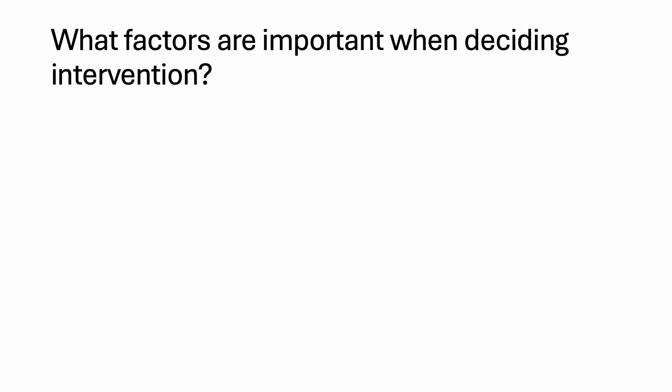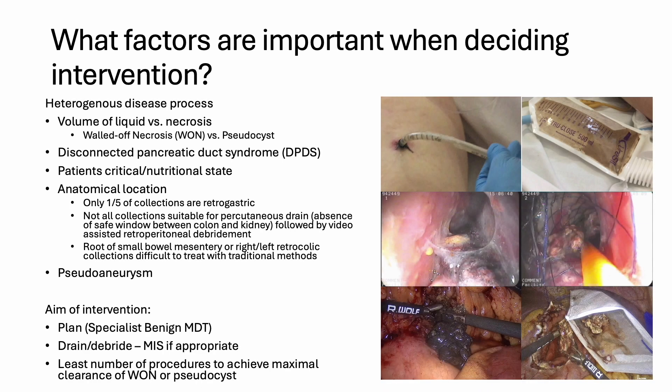What factors are important when deciding on intervention? Severe acute pancreatitis is a heterogeneous disease process, so the first factor we need to look at is whether it's a liquid or necrotic collection, and whether there is walled-off necrosis, also known as WON, or a pseudocyst present.